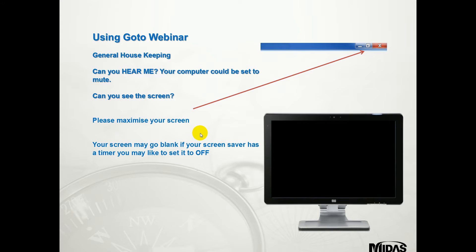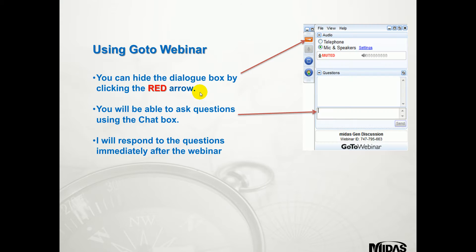Just about using GoToWebinar and also maximising the screen - some general housekeeping rules. If you can't hear me you're obviously set to mute or a very low volume. If you want to maximise the screen, just click on the two boxes in the top right hand corner. If your screen saver kicks in, you'll just have to wiggle the mouse. Use the red arrow if you want to minimise the panel to the side, or you can also ask questions in the dialog box. Any questions we will get back to you at the end or respond to in an email.